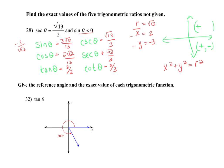These problems test your knowledge of reference angles and unit circle angles. Remember: the reference angle is the closest angle to the x-axis. In the fourth quadrant, the closest x-axis is 360. If they give you 300 degrees, the reference angle is 360 minus 300 equals 60 degrees. The tangent of 60 degrees is root 3, but since we're in the fourth quadrant, tangent is negative — so the answer is negative root 3.